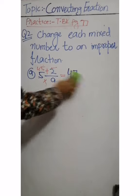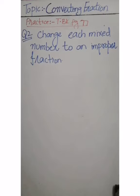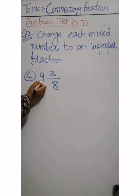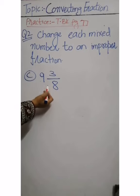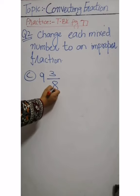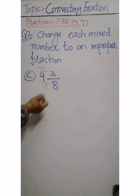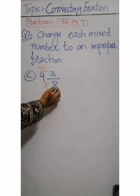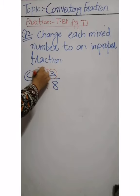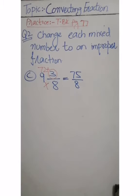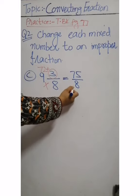Part c is 9 whole 3 by 8. This is a mixed number; you have to change it into an improper fraction. First, multiply the denominator by the whole number: 8 multiplied by 9 gives 72. Now add the numerator: 72 plus 3 gives 75 by 8. This is an improper fraction.